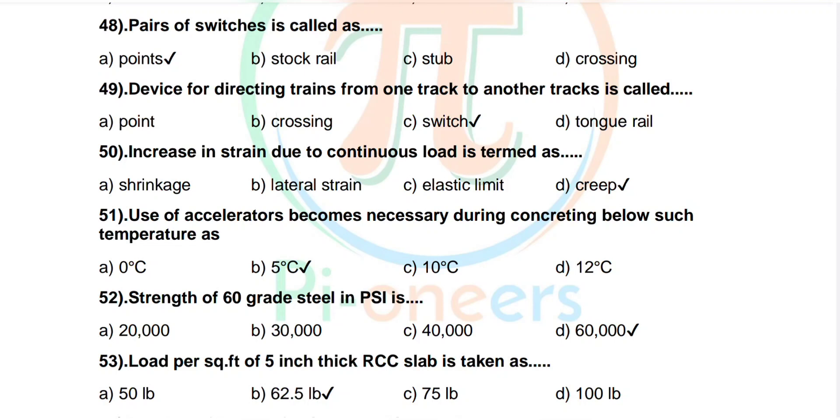Question number 52: Strength of 60 grade steel in PSI is. Options are 20,000, 30,000, 40,000, 60,000. Correct answer: 60,000.